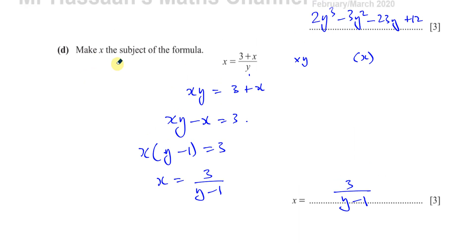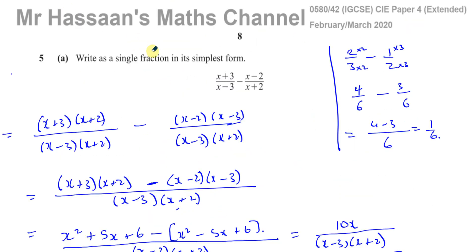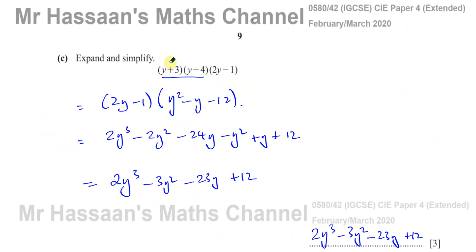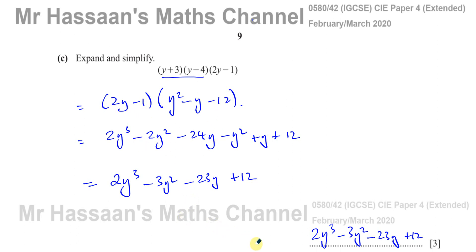That concludes question number 5 from the IGCSE March 2020 paper 4.2. Other questions from this particular paper can be found in the playlist that will appear on screen. Other questions from the topic of algebra, algebraic manipulation and equations can be found in the playlist over here. You can subscribe to my channel by clicking on the link. Thank you for watching and see you soon.